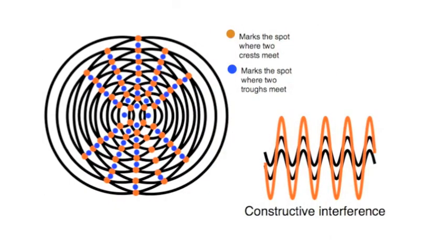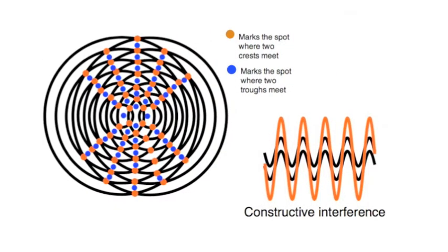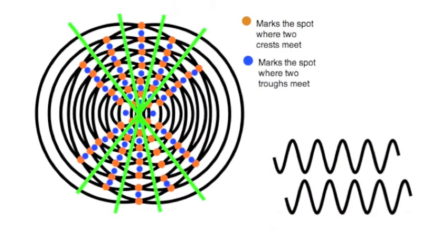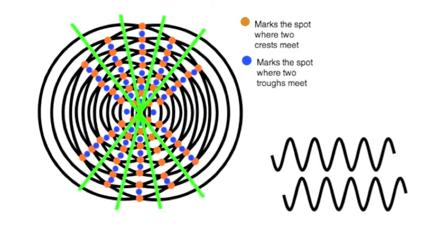Now, between these lines of dots, where the green lines on the diagram are being placed, crest meets trough, and trough meets crest.